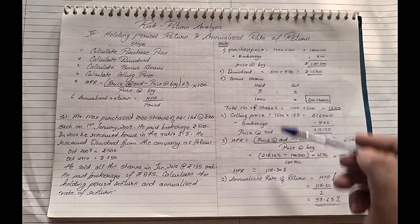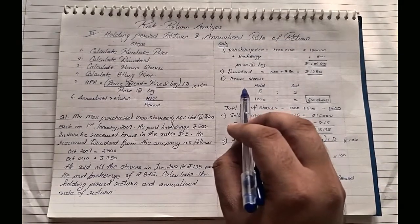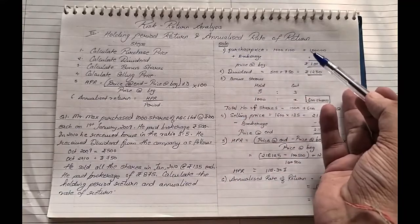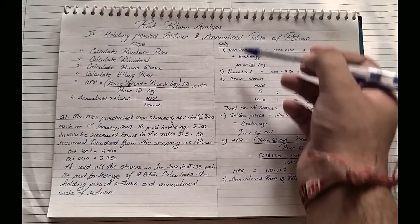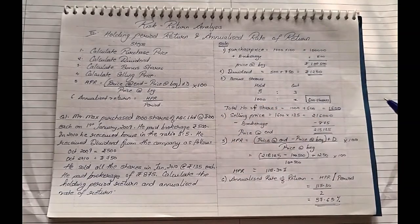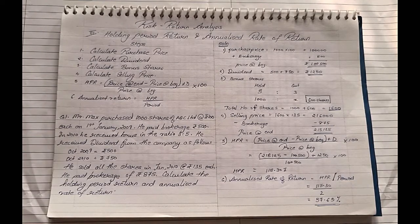These are the steps to follow — it is a straightforward sum. If the problem does not include bonus, ignore that step. If there is no dividend, skip that step. Follow the steps in order and ignore whatever is not applicable. That was the third part of the chapter Risk and Return Analysis. I hope everyone understood how to calculate the holding period return and the annualized rate of return. Thank you very much.